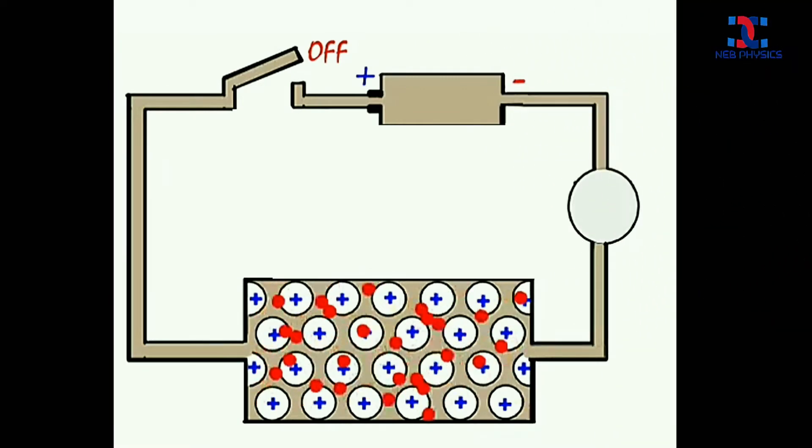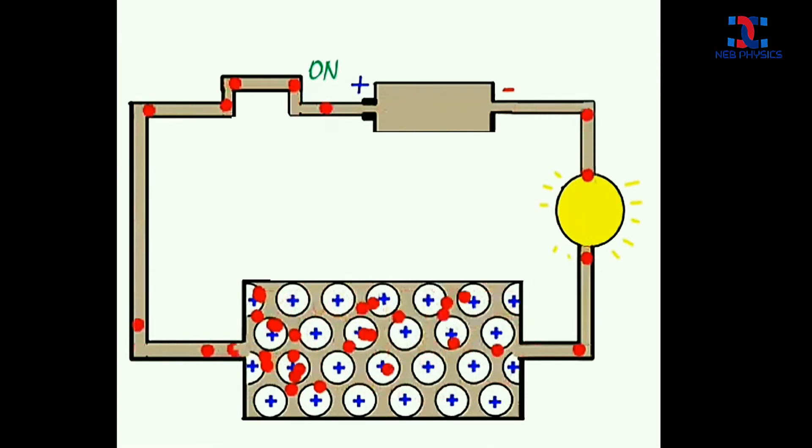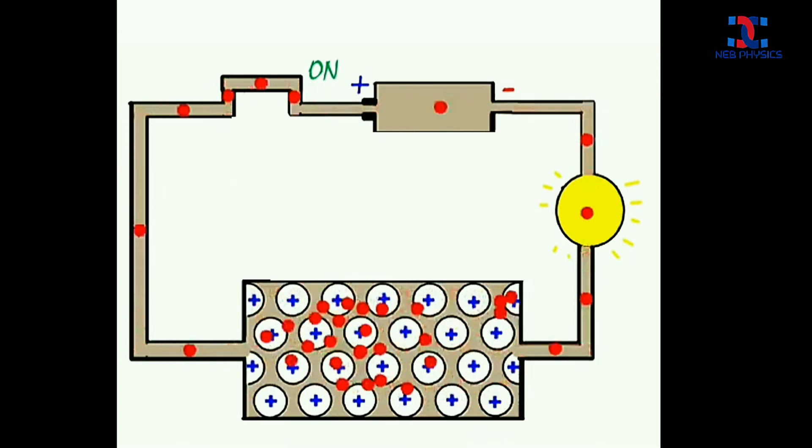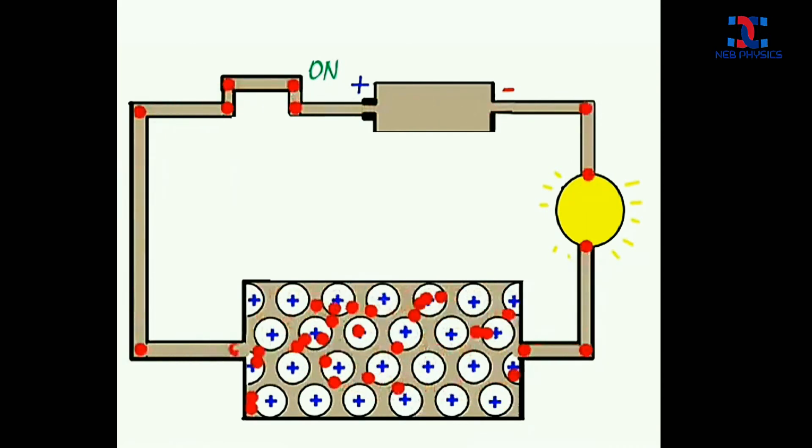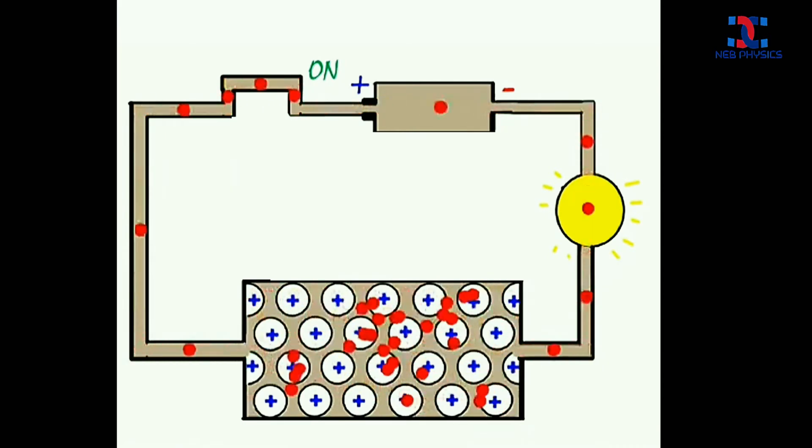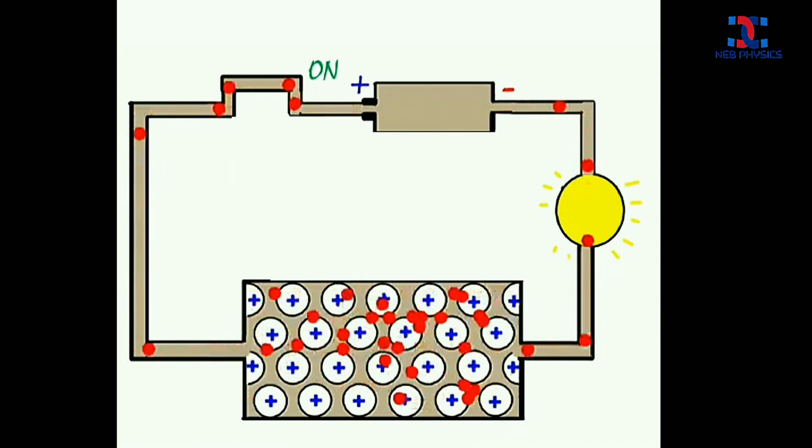When the electric field is not applied, the free electrons inside the metal specimen keeps on moving randomly inside it. But as soon as the switch is on, the electrons start experiencing force. So they are attracted towards the positive terminal of the cell. And the number of electrons escaping out of the metal are compensated by the electrons entering into the metal from the negative terminal of the cell.